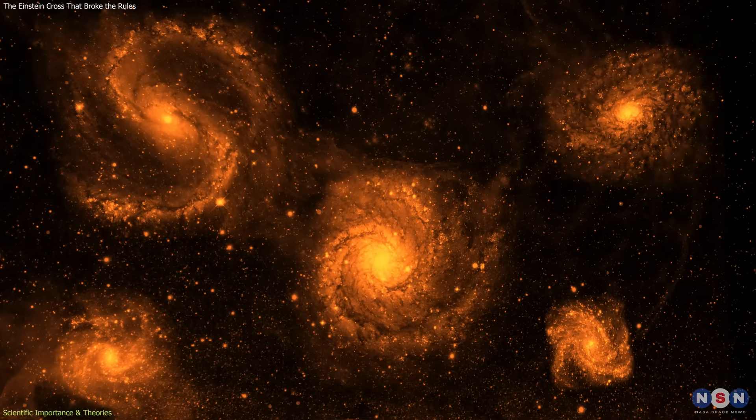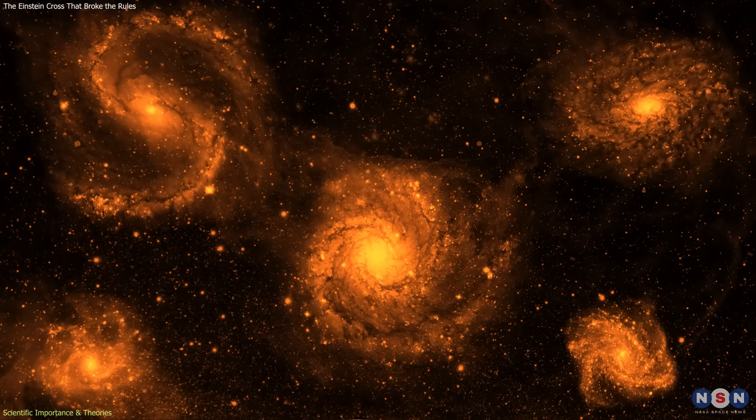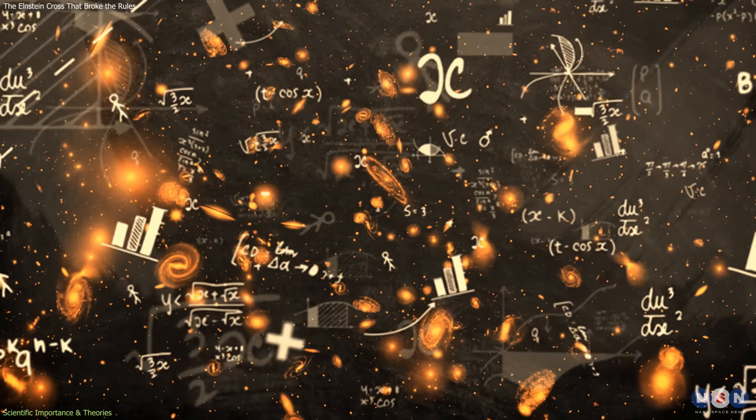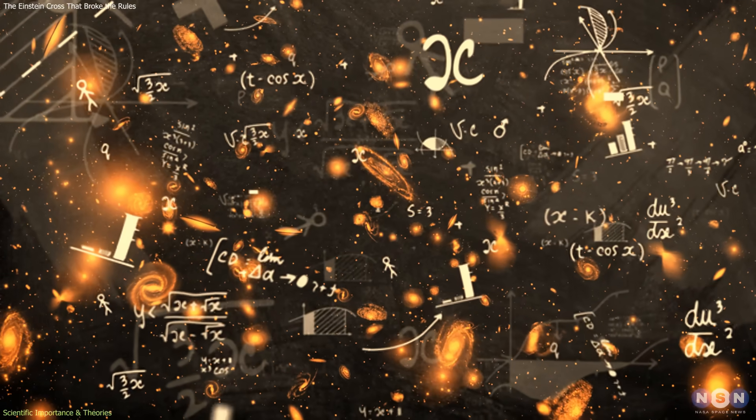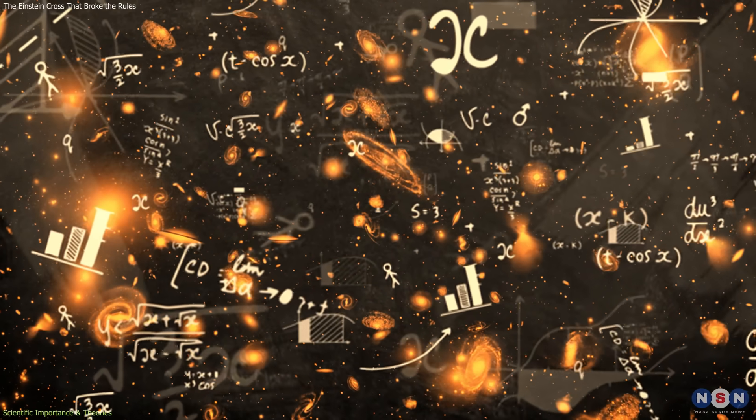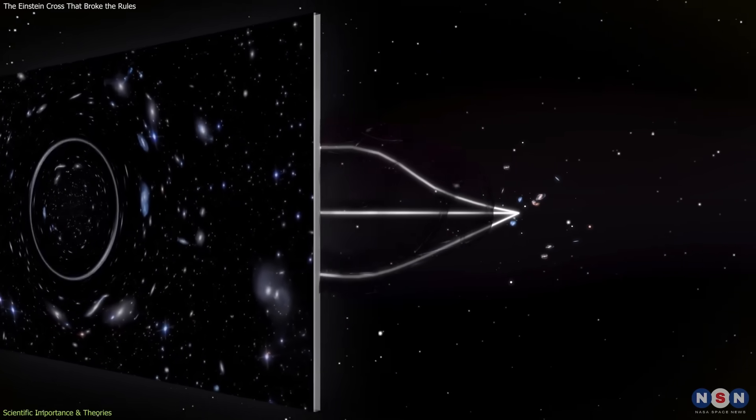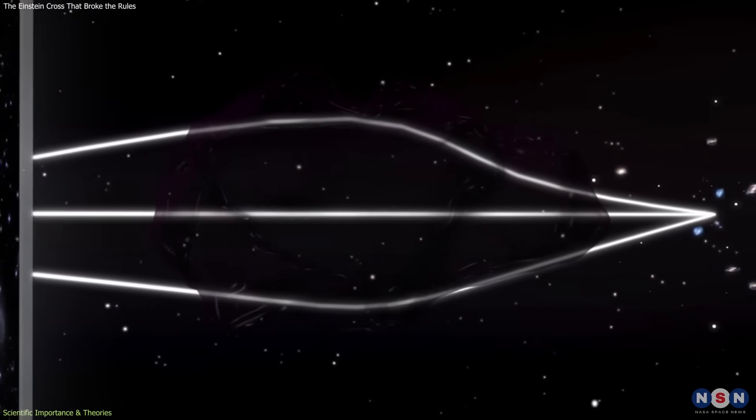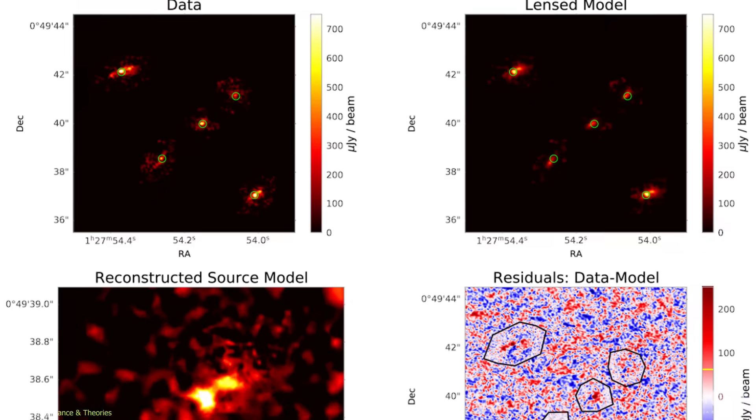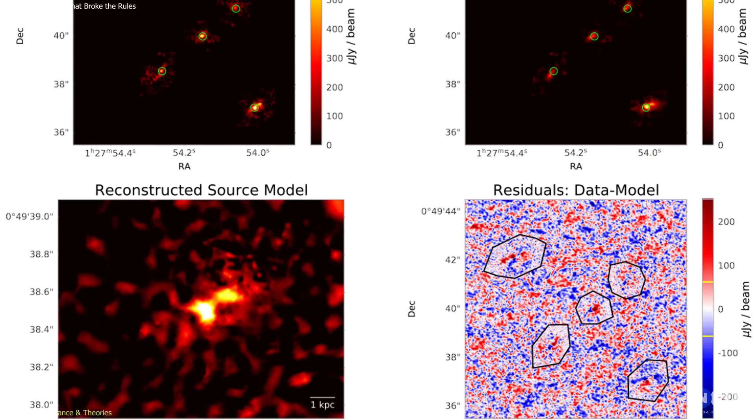Adding more detail about the galaxy's possible shapes or positions didn't help. The physics of the visible matter simply didn't allow for a central fifth image. The only way forward was to include an additional, invisible component—a dark matter halo. With the halo added, the simulations aligned with the observations.